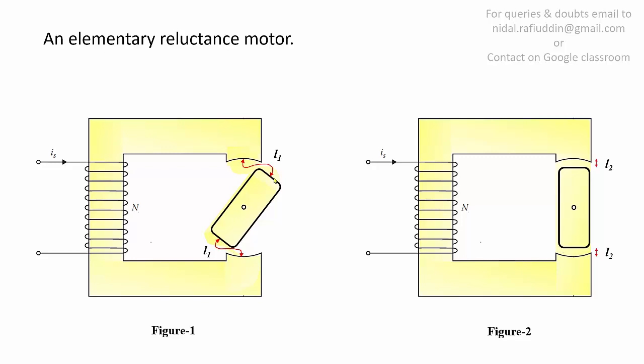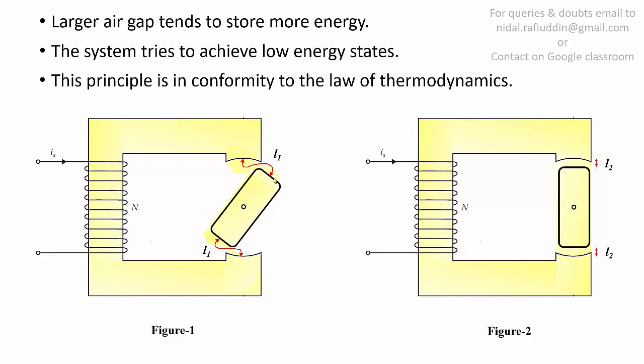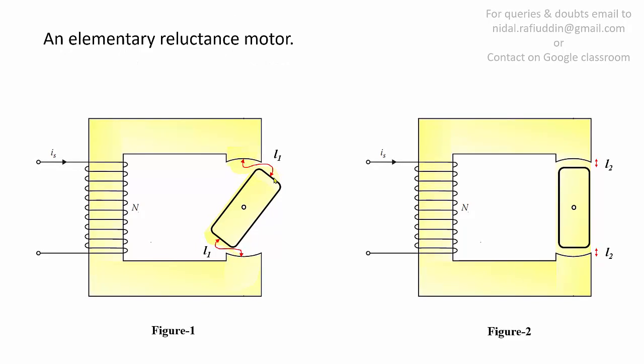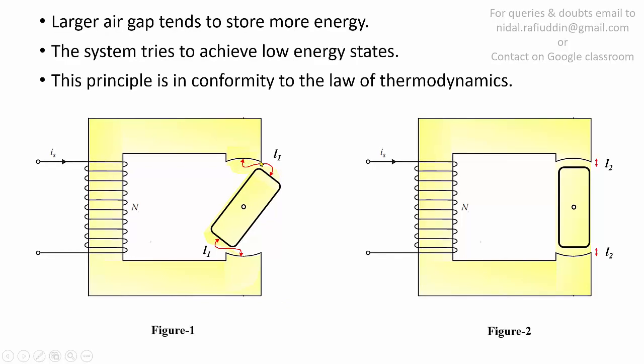Thus the reluctance offered to the establishment of magnetic flux will be more in figure 1 than in figure 2. If we energize the core in figure 2, the flux lines establish along the core while going straight through the rotor bar. On the other hand, on energizing the core of figure 1, the flux lines tend to follow the low-reluctance bar through the tilted rotor. Since the rotor is tilted, the air gap between the rotor and the poles of the core is larger compared to figure 2. If the air gap is made large, more energy is stored in the air gap. By the second law of thermodynamics, the system will try to achieve a low-energy state, and thus if the rotor is offset from its stable position (figure 2), it will return back to that position.